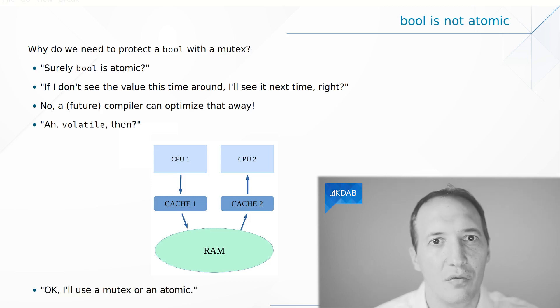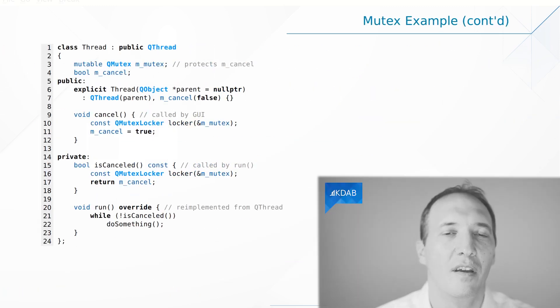The only two available options here are use a mutex or use atomics. So we won't talk that much about atomics—this is a bit more advanced. But for now let's have a look at how to use a mutex.